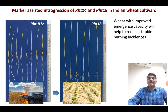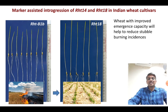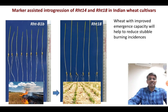Presently, we are engaged in fine mapping and marker-assisted breeding for alternative dwarfing genes RST14 and RST18 to develop semi-dwarf wheat genotypes suitable for conservation agriculture. Semi-dwarf wheat with alternative dwarfing genes can emerge through earlier crop residues, and wheat with improved emergence capacity also helps to reduce crop residue burning incidences.